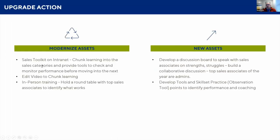We asked what content we have today that we need to modernize — meaning we have it but we need to update it. We talked about a sales toolkit on our intranet to really take all the job aids, the handouts, and the videos we have and put them together, giving associates a one-stop shop to dive into each part of the sales strategy. We also discussed chunking our videos, doing roundtables with top salespeople for focused training, and for new assets — developing new tools and creating a discussion board.